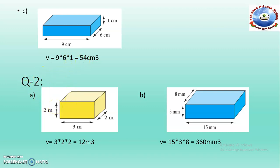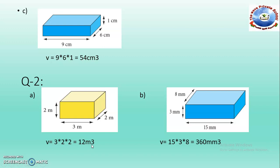Question number 2. This is another question and has a cuboid shape. Length is 3 meters, width is 2 meters, height is 2 meters. Here the unit is meters. So just multiplying these 3 things, we can get the answer 12 cubic meters.